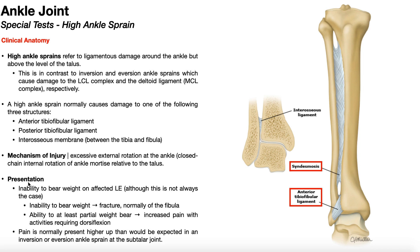The typical presentation of somebody with a high ankle sprain involves inability to bear weight on the affected lower extremity, or at the very least pain with bearing weight. If there is total inability to bear weight, you would suspect a fracture — normally of the fibula, often an avulsion fracture from rupture of one of these ligaments, confirmed with an x-ray. If the patient can at least partially weight bear but it's painful, it probably means there's no fracture, just ligamentous damage in one of the three aforementioned structures.